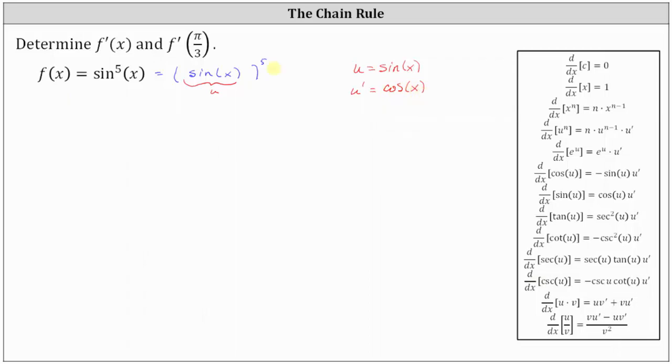So we can just think of f of x as the function u to the fifth, apply the power of differentiation with the chain rule. Looking at our notes on the right, the derivative of u to the power of n with respect to x is equal to n times u to the power of n minus one times u prime, which indicates that f prime of x is equal to five u to the fourth times u prime.